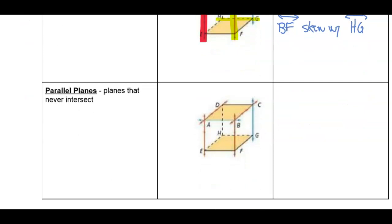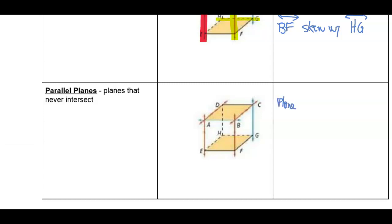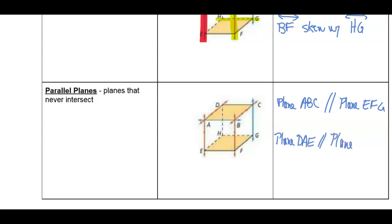We also have parallel planes, and parallel planes are planes that will never intersect. We can say plane ABC is parallel to plane EFG — that top flat surface is parallel to the bottom surface. We could also say that plane DAE is parallel to plane BCG. We have other parallel planes in that diagram as well.